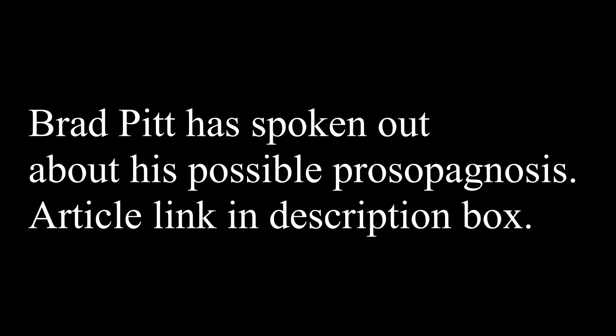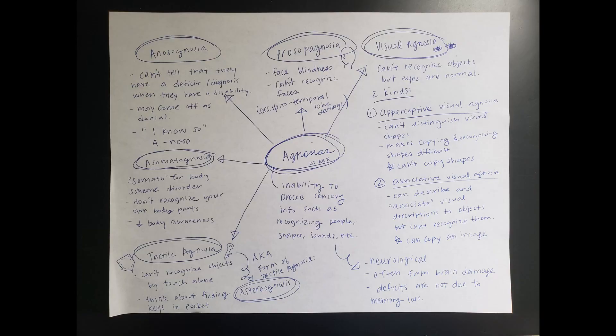Moving on to anosognosia. Anosognosia is when you can't tell that you have a deficit or a diagnosis, even when you do have some kind of disability. It can come off like denial. For example, someone might have a broken leg and not realize it, saying 'oh yeah, I can transfer out of bed with no problem, I don't need any help, I can get up and walk.' That's how a person with anosognosia would think.